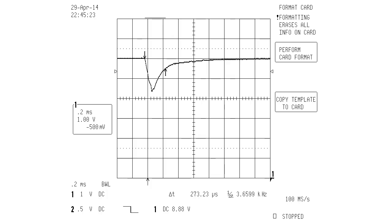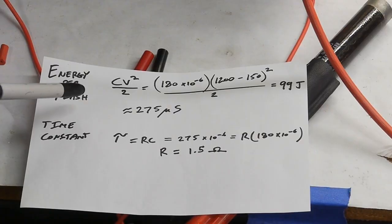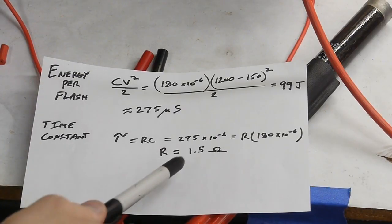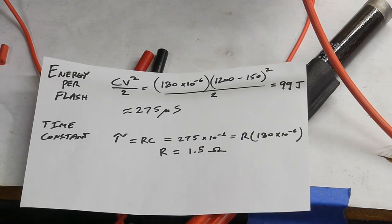From the scope we can see that about 66% of this energy is shot off in about 275 microseconds and then knowing that we can figure out what the effective resistance of the flash tube is and we get about an ohm and a half which is reasonable.